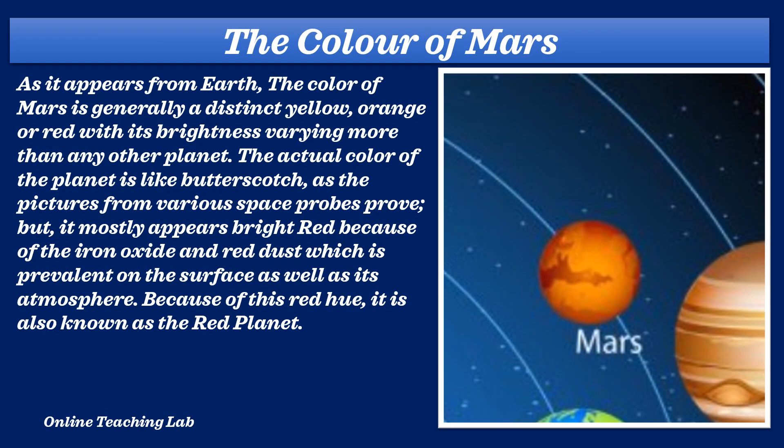The color of Mars as it appears from our Earth is generally a distinct yellow, orange, or red, with its brightness varying more than any other planet. The actual color of the planet is like butterscotch, as pictures from various space probes prove. But it mostly appears bright red because of the iron oxide and red dust, which is prevalent on the surface as well as its atmosphere.